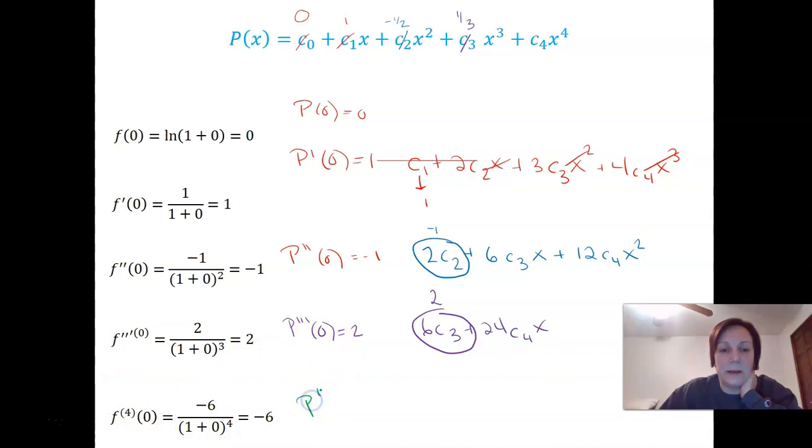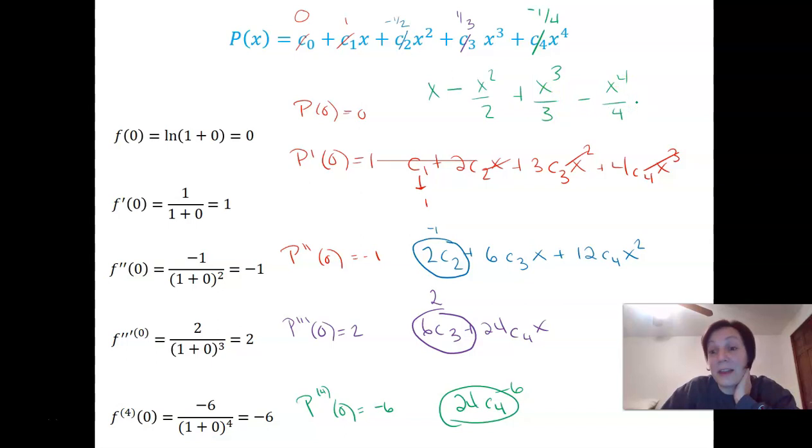Third derivative. I need p triple prime of 0 to match f triple prime of 0. So I need it to be a 2. Take the derivative of constant. It goes away. I have 6c3 plus 24c4x. Plug in a 0. I need it to be a 2. So I need this to be a 2. c3 must equal 1 third. Last one. I need that the fourth derivative evaluated at 0 of my polynomial matches my function. So negative 6. Take the derivative of constant. It's 0. The derivative of 24c4x is 24c4. In order for that to equal negative 6, I need c4 to be negative 1 fourth.